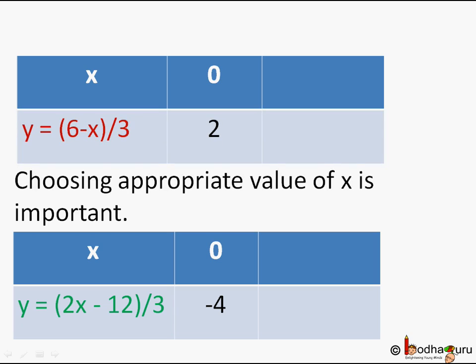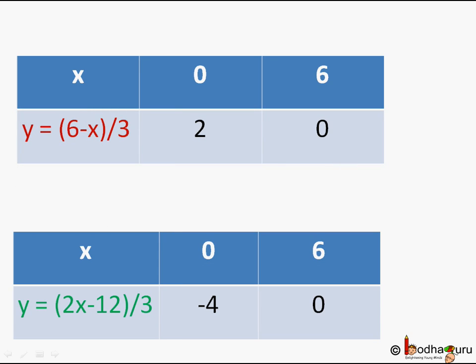So this equation, that would make it a little harder to plot on the graph paper. If we take x equal to 6 for the first equation y equal to 6 minus x by 3, so 6 minus 6 by 3, which is equal to 0.